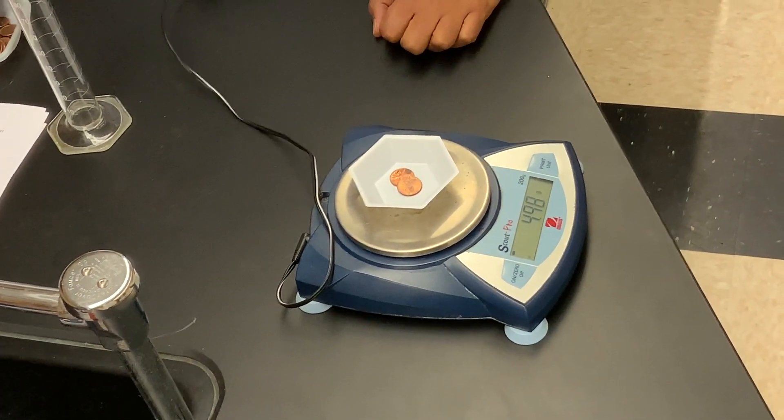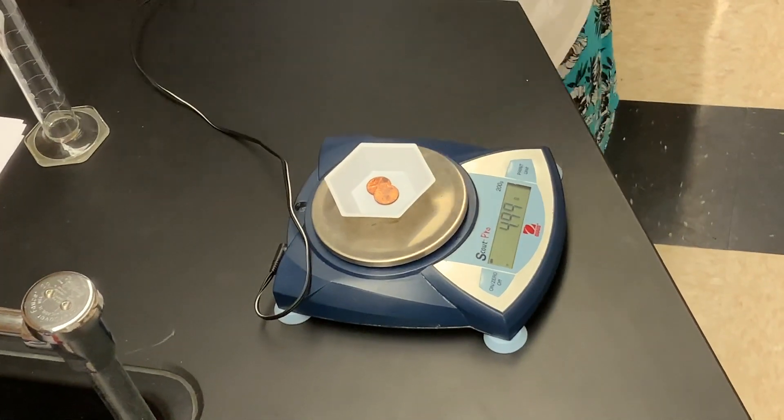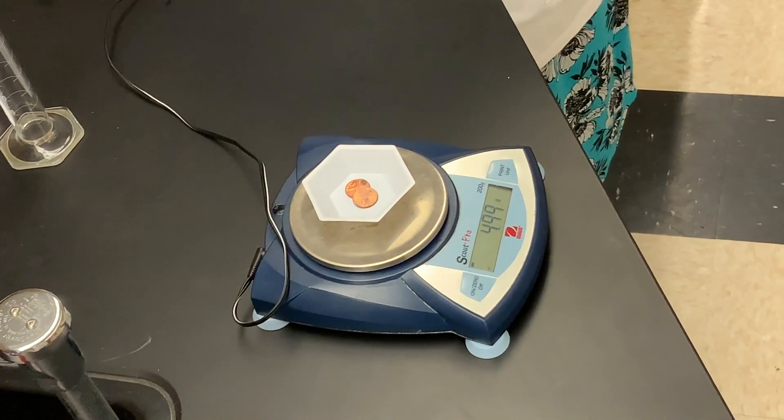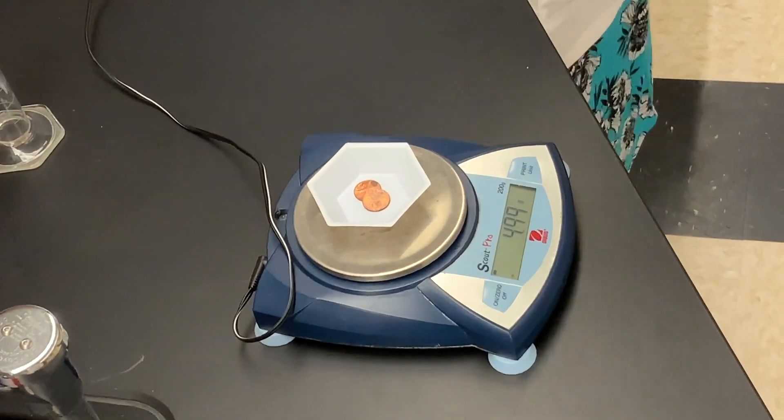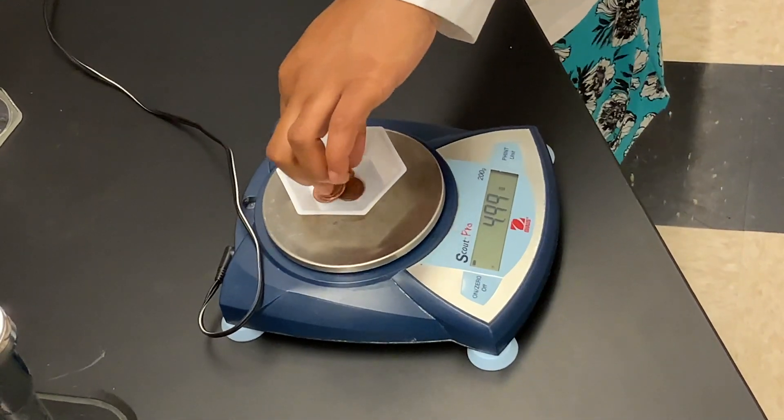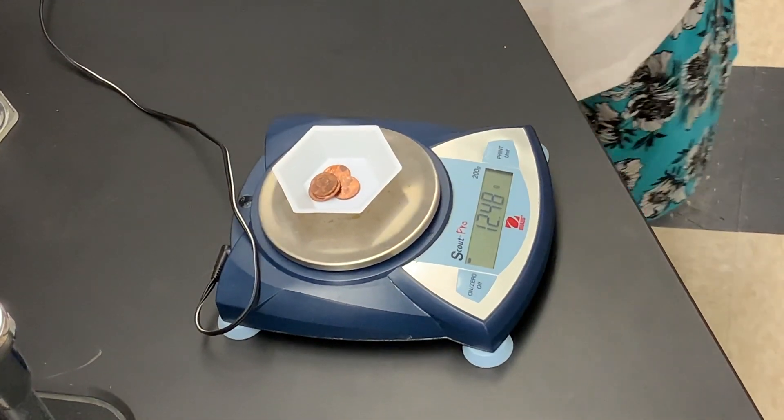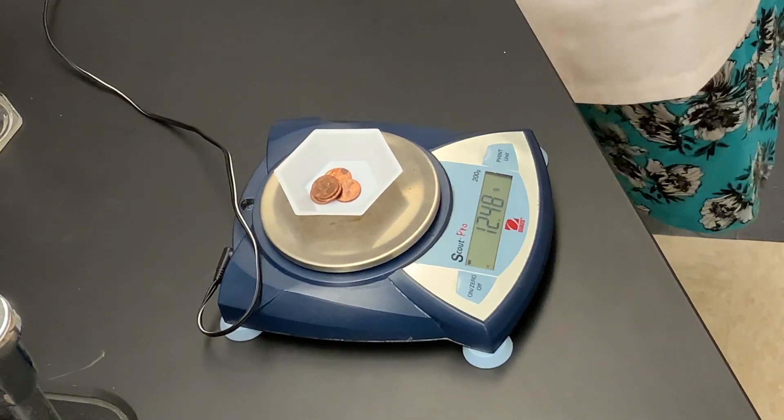Next, we're going to add three more pennies to the two that are already there, so we're going to have a total of five pennies. The mass of five pennies is 12.48 grams.